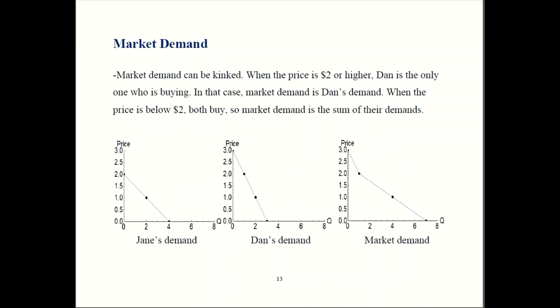Market demand can be kinked. This happens when there is a situation where not everyone is buying. Down here, I modified our previous example a little bit. Jane's demand curve is still the same. She still buys zero when the price is two and two when the price is one.